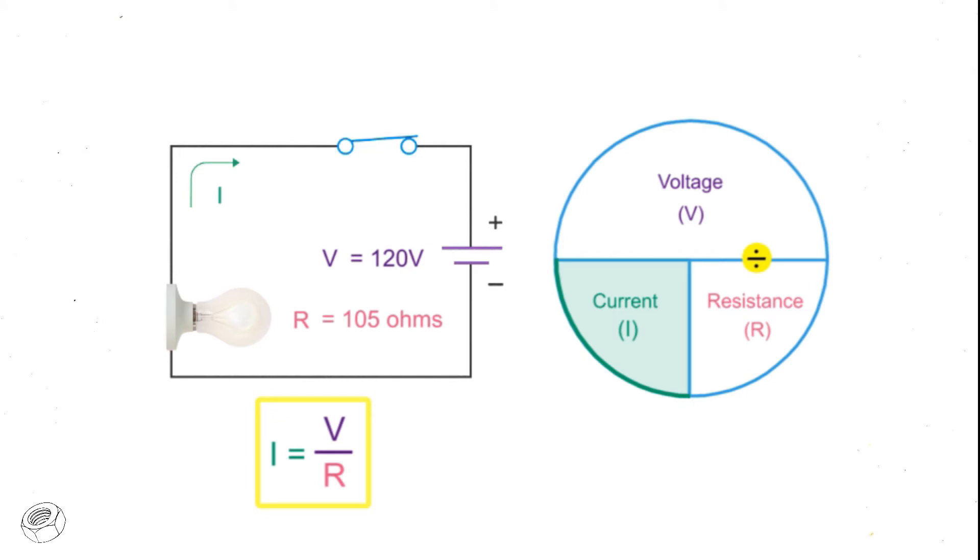Using the Ohm's law circle and solving for current, you would divide the voltage by the resistance. So, 120 volts divided by 105 ohms is 1.142 amps. So you have 1.142 amps of current flowing through the light bulb.